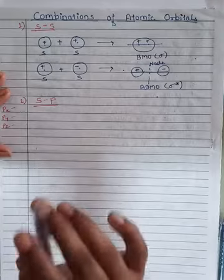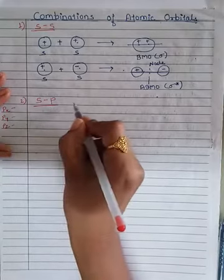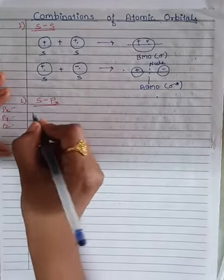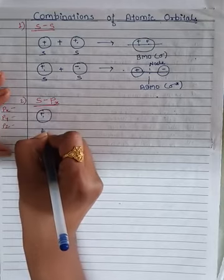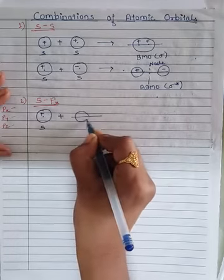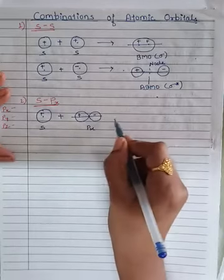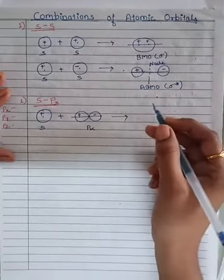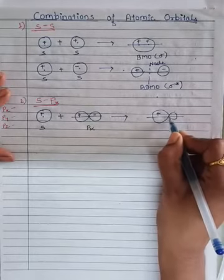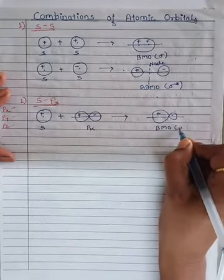In the case of the S-P combination, we consider only the P orbital whose lobes are pointing along the axis — the PX orbital. We have an S orbital with a plus sign undergoing combination with the PX orbital. When both have the same sign (plus-plus), there is formation of a larger resultant — larger for plus, smaller for minus. This is the bonding molecular orbital with symbol sigma.